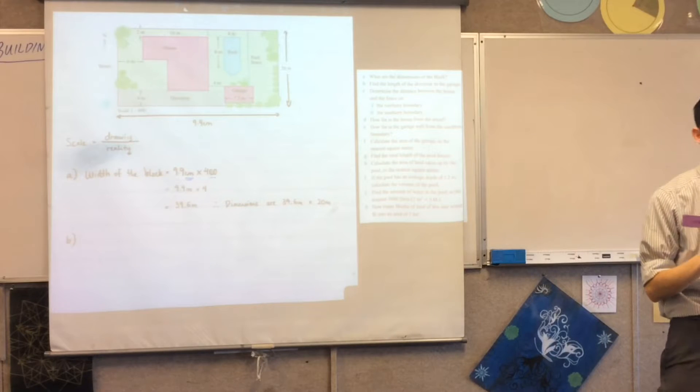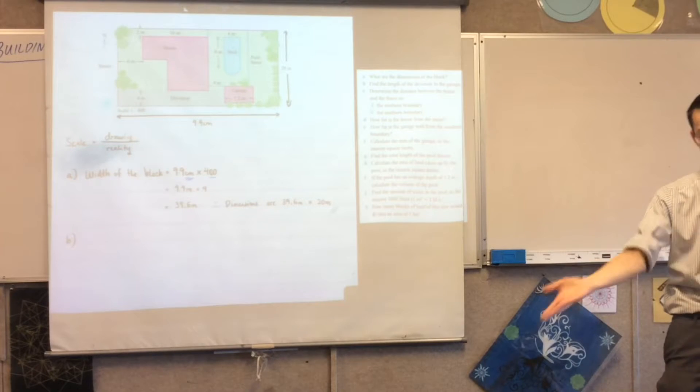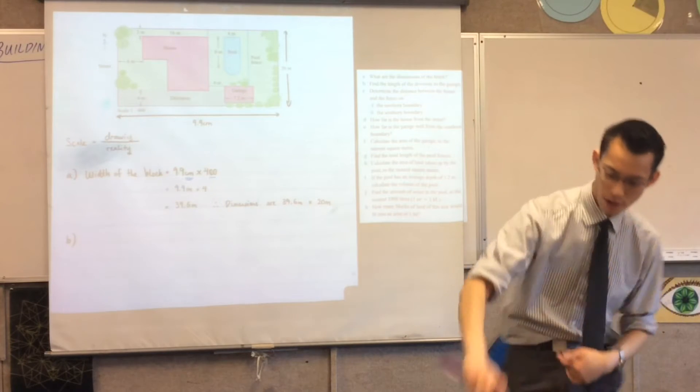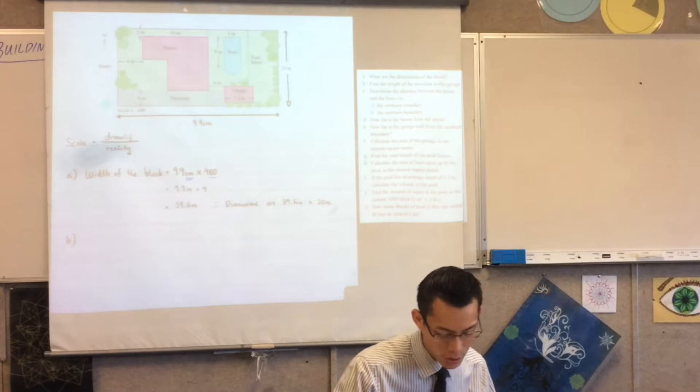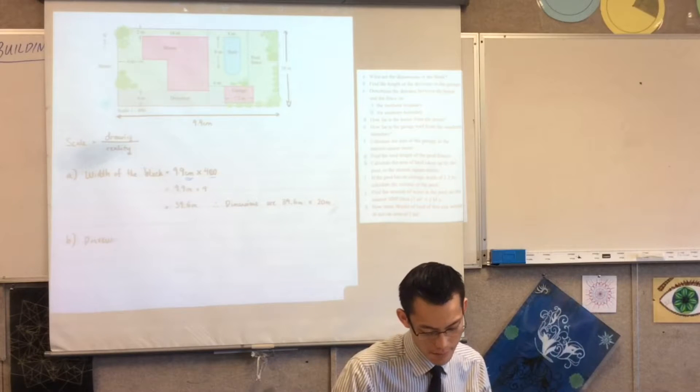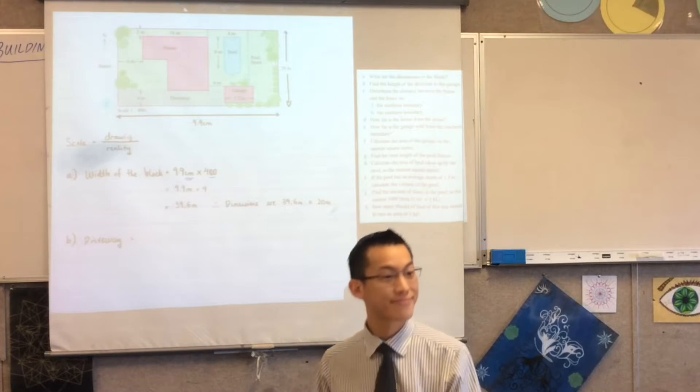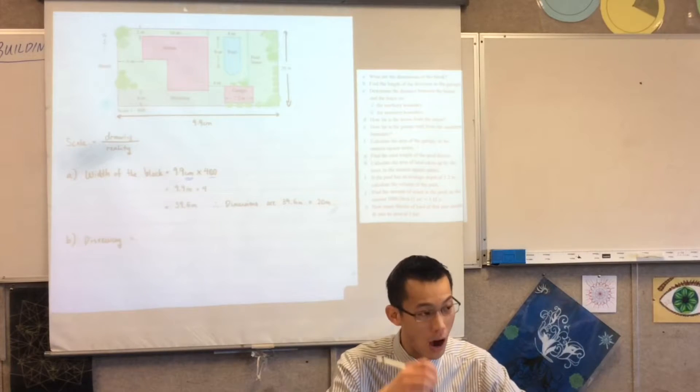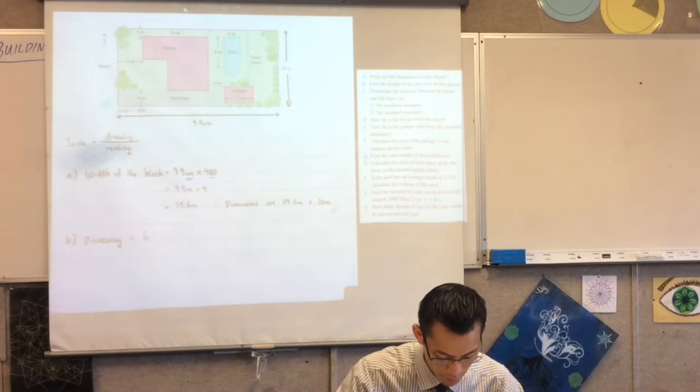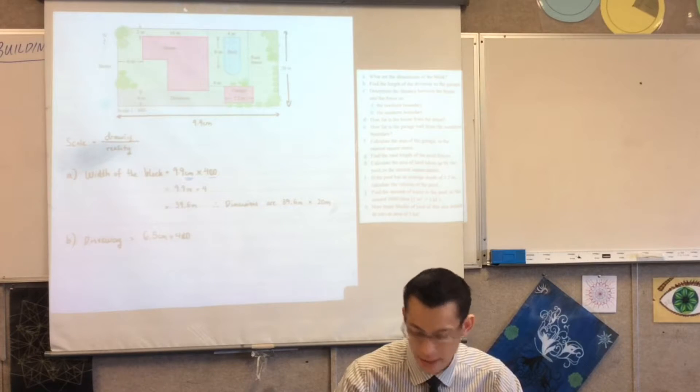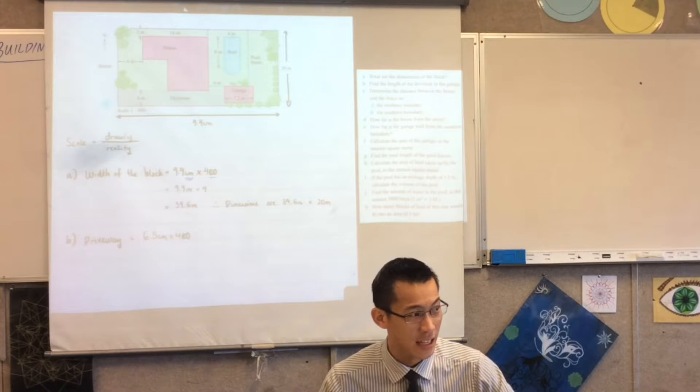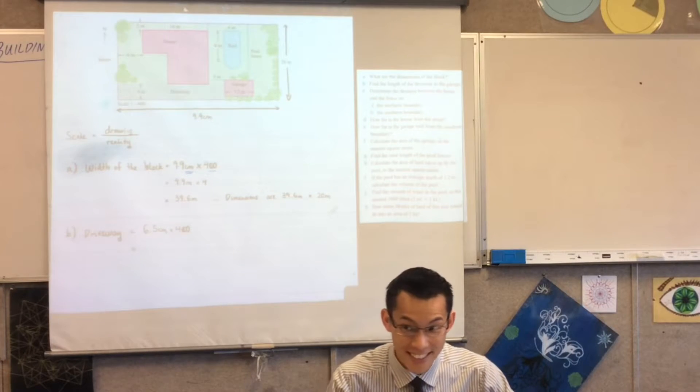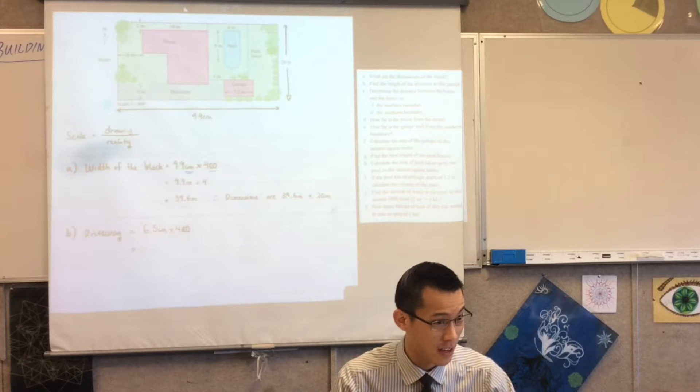By the way it's worth mentioning in an exam they have to take this into account and there are questions just like this. At the HSC we have to accept a range of responses. In fact my answers disagree with the textbooks but they'll only be off by whatever that amount is. So let's go with 6.5, driveway: 6.5 centimeters times 400, that ends up being 26 meters.